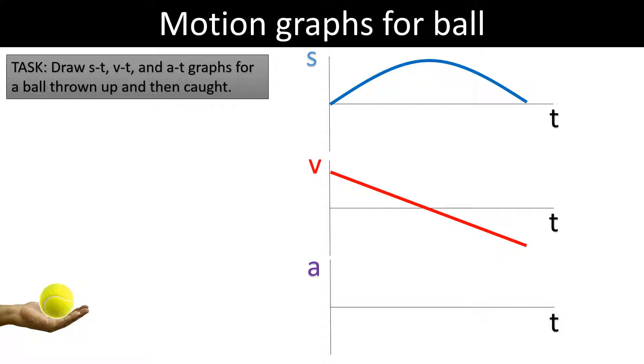After that, if we can use what we said before with velocity-time, we should see that the gradient of a v-t graph is acceleration, it's constant, it's negative, so we should get a constantly negative graph.